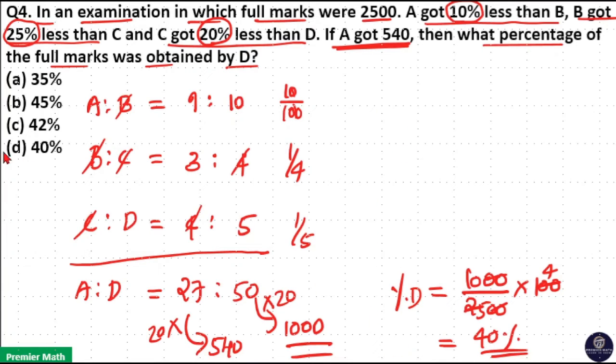If you want to do it in another method, I will show you that. A is to B is to C is to D. Let us consider D got 100 marks. Then C got 20 less than D, 20 percentage less than D. 100 percentage is 100, 20 percentage means 20. So 20 less than D means 100 minus 20, 80.